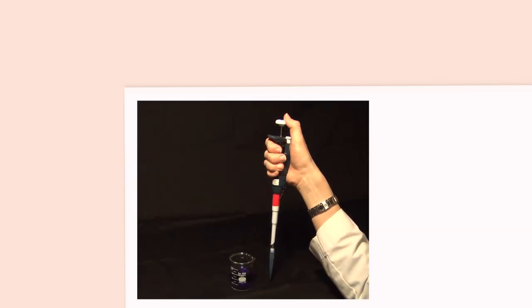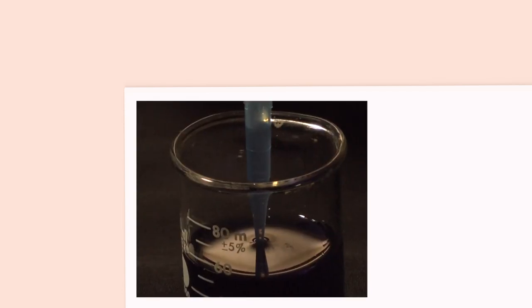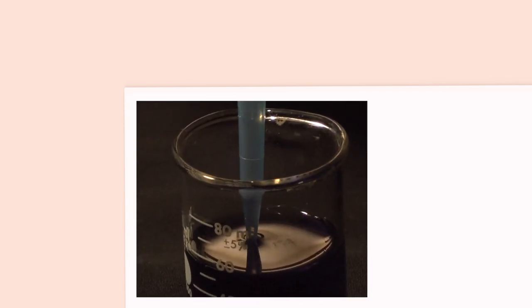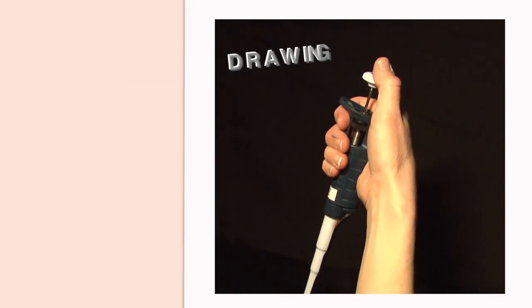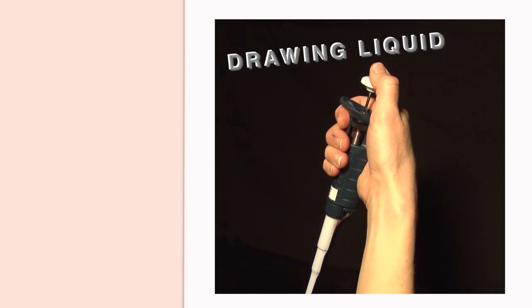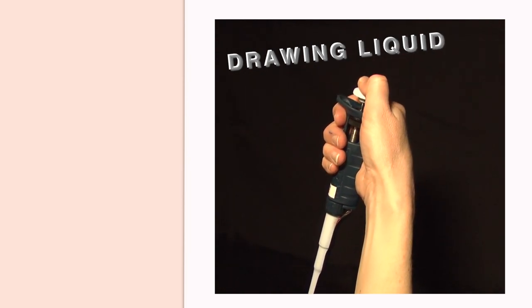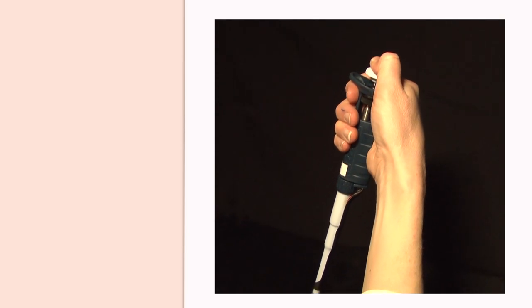Pressing and depressing the plunger will allow you to draw liquid into the disposable tip, and then to dispense the liquid. To draw liquid into the tip, press the plunger down until you feel the plunger gently resist. This is the first stop.